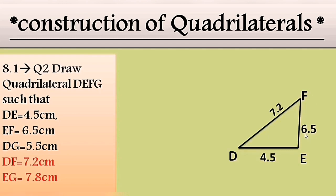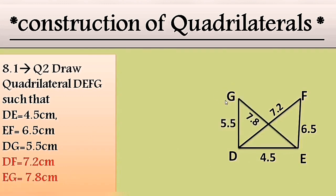Now that point F is located, it's time to locate point G. Two sides are DG and EG. Take distance DG — 5.5 — in the compass, keep the metal tip on point D, and draw the arc. Then take distance EG — 7.8 — keep the metal tip on point E, and draw that arc. These arcs will intersect to give point G. Join those two points, and then the last step is to join segment GF. Your quadrilateral is ready.